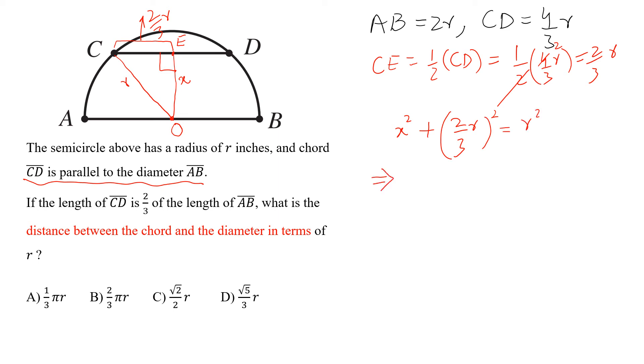We want to find x. So x² = r² - (2/3r)². Simplify this.